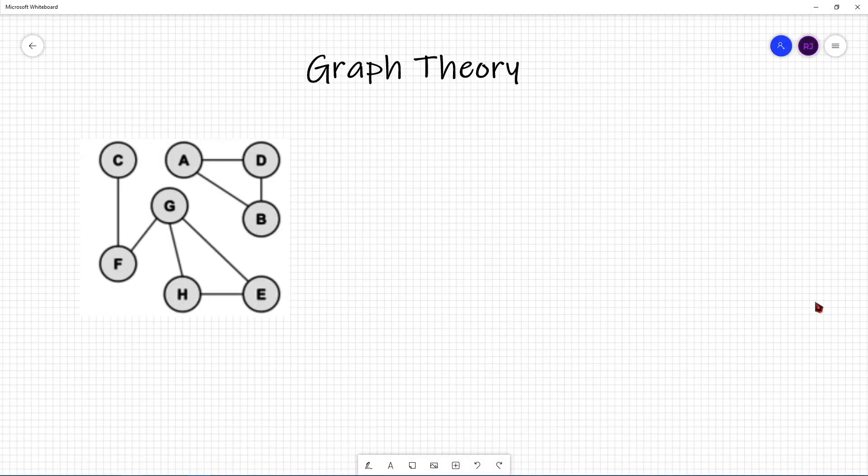Now, let's talk about paths. A path from vertex X to Y in a graph is a list of vertices which are successive vertices that are connected by edges in a graph. For example, a path in this graph over here could be F, G, H, E.